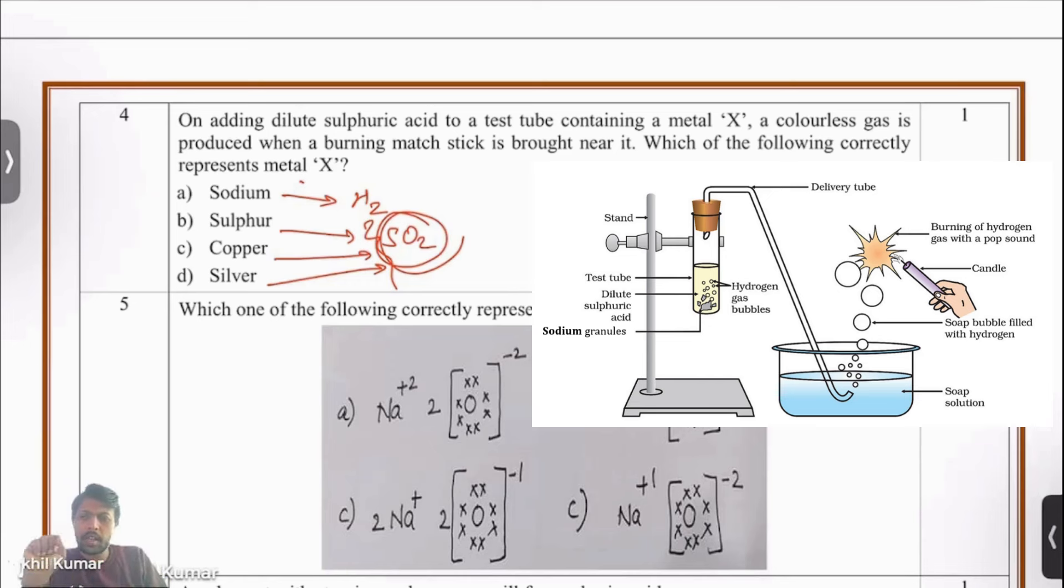It's a colorless gas and it's pointing towards hydrogen. The main point which indicates that it must be hydrogen gas is that it's colorless and it burns when brought near the mouth of the test tube. We have identified our answer - option A. It must be sodium. Sodium when reacts with sulfuric acid produces hydrogen, and hydrogen burns. Hydrogen is combustible.